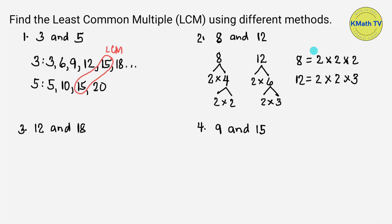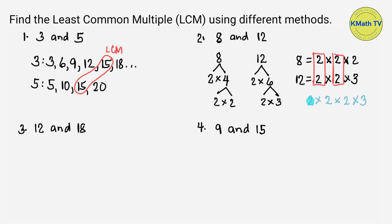Let's find the common factors. Now, to find the LCM, let's multiply all the prime factors: 2 times 2 times 2 times 3. Multiplying: 2 times 2 equals 4, 4 times 2 equals 8, and 8 times 3 equals 24. So the LCM of 8 and 12 is 24.